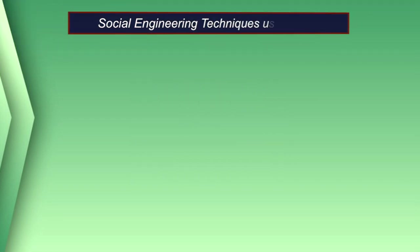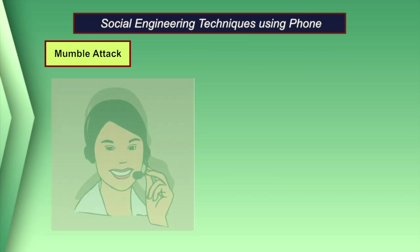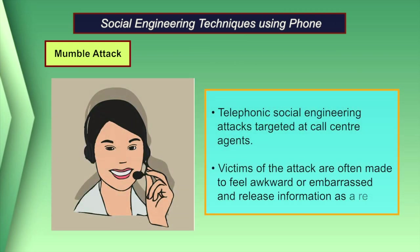Now let us discuss various types of social engineering techniques using the phone. The first technique is the mumble attack. Mumble attacks are telephonic social engineering attacks targeted at call center agents. The social engineer poses as a speech-impaired customer or as a person calling on behalf of a speech-impaired customer. Victims of the attack are often made to feel awkward or embarrassed and release information as a result.